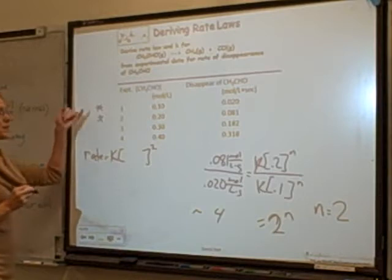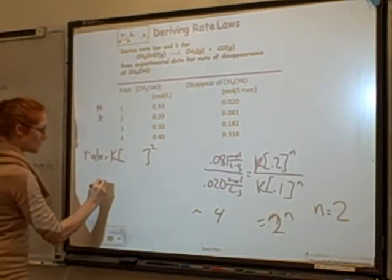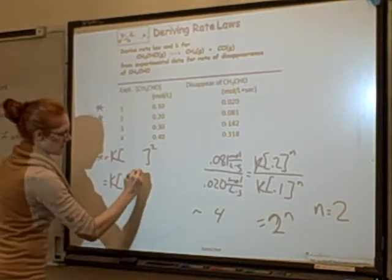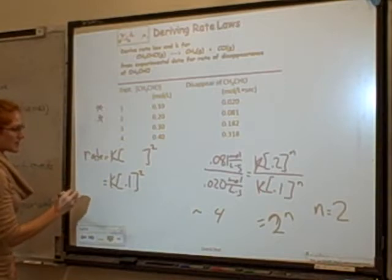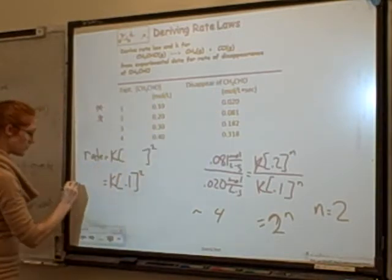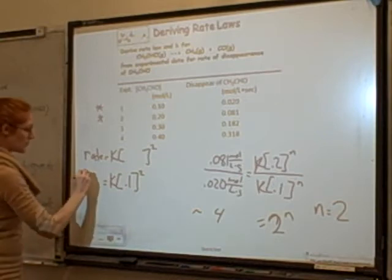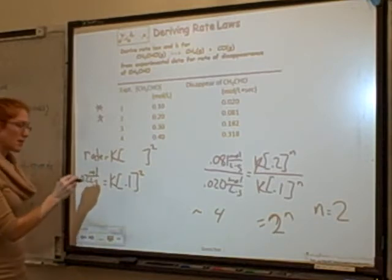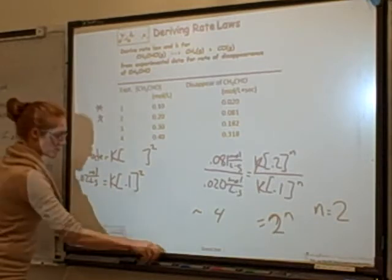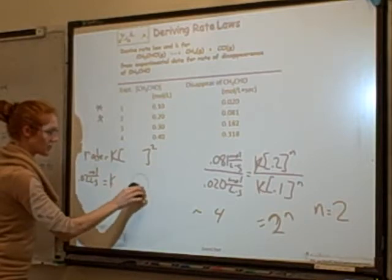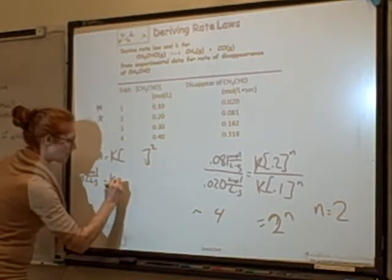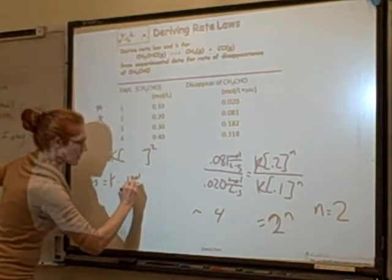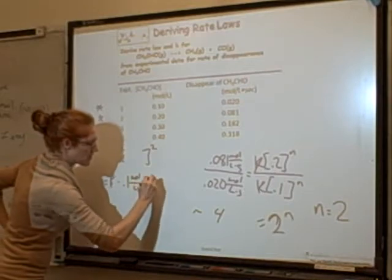I can pick any experiment I want — I'll pick the first one. Rate equals k, the concentration used in that reaction was 0.1 moles per liter, and the rate was measured as 0.02 moles per liter per second. I want to get k by itself. So I have 0.1 moles per liter times 0.1 moles per liter. I'm going to write that out since the units can get messy. So k equals k times 0.1 mol/L times 0.1 mol/L.